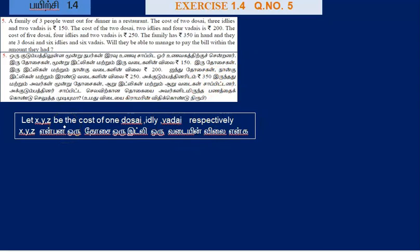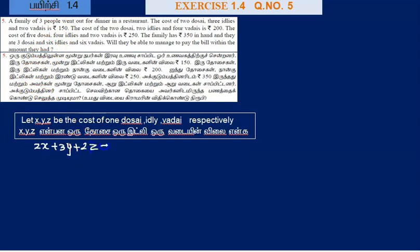First equation: cost of 2 dosa, 3 idli, 2 vada. That is 2x plus 3y plus 2z is equal to 150.